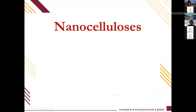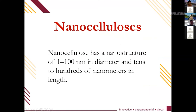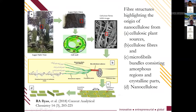From natural fiber, especially lignocellulose, we can obtain nanocellulose. Nanocellulose has a nanostructure of one to one hundred nanometers in diameter and ten to hundreds of nanometers in length. This fiber structure highlights the origin of nanocellulose from the cellulose plant.